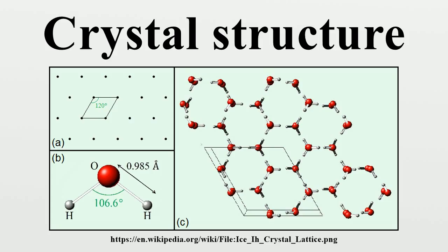The 14 three-dimensional lattices, classified by crystal system, are shown above. The Bravais lattices are sometimes referred to as space lattices. The crystal structure consists of the same group of atoms, the basis, positioned around each and every lattice point. This group of atoms therefore repeats indefinitely in three dimensions according to the arrangement of one of the 14 Bravais lattices. The characteristic rotation and mirror symmetries of the group of atoms, or unit cell, is described by its crystallographic point group.